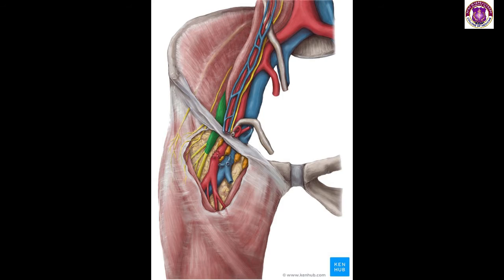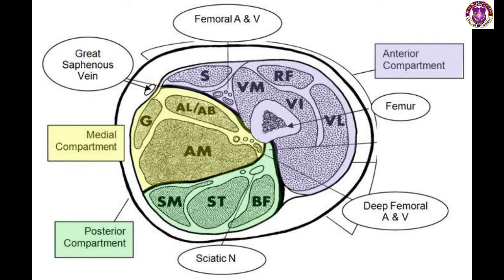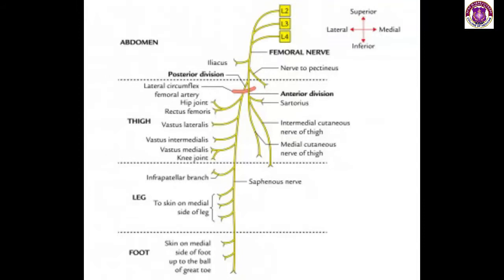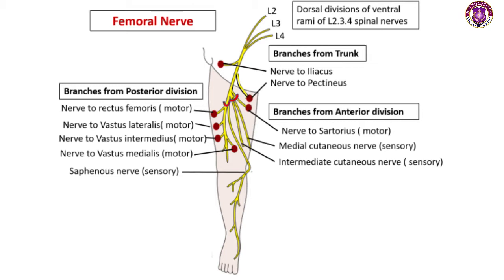Below the inguinal ligament, it divides into anterior and posterior divisions roughly around 1.5 cm. The femoral nerve supplies all muscles of the anterior compartment. Remember: the femoral nerve supplies the anterior compartment, the obturator nerve supplies all of the muscles in the medial compartment, and the sciatic nerve supplies all of the muscles in the posterior compartment.